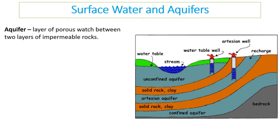One key thing to be aware of is that water isn't always stored in rivers — it can also be stored in aquifers. Around the world, many areas rely on aquifers for their water supply; Mexico City is a good example. An aquifer is a layer of porous rock between two layers of impermeable rock, where water builds up and is stored.